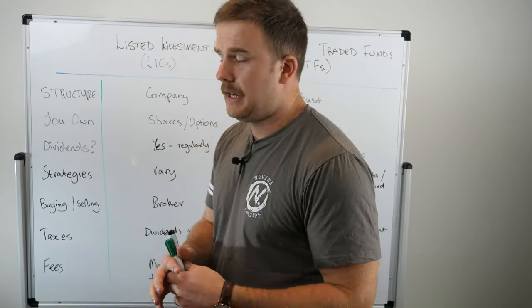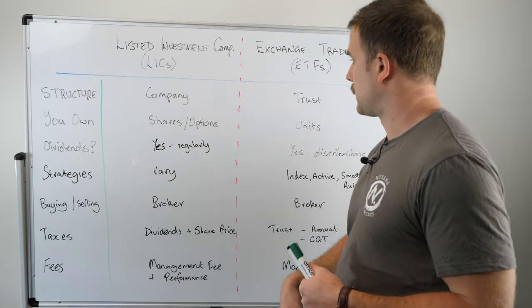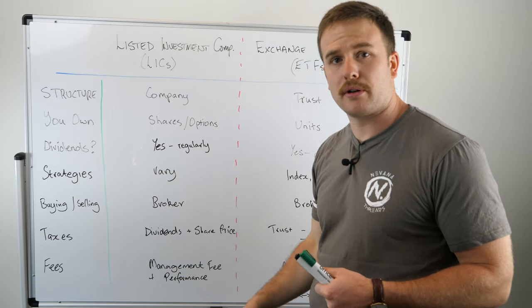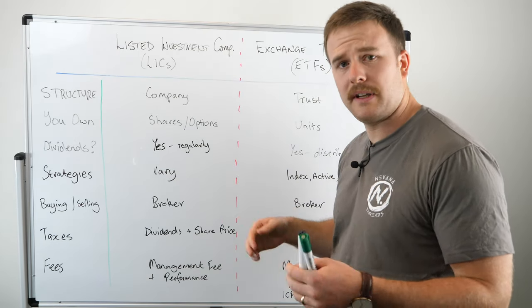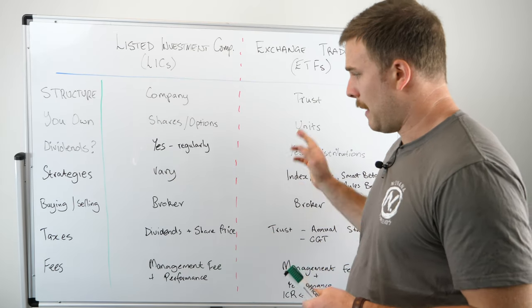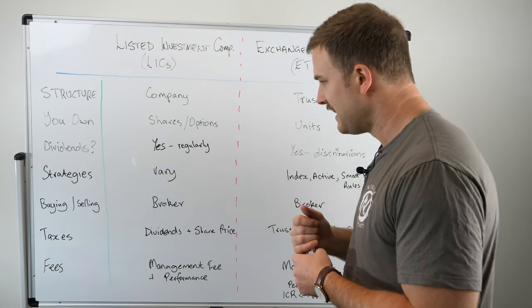How do you buy each of these? You can buy and sell a listed investment company or exchange-traded fund using a share brokerage account. The minimum is typically $500 plus some fees to get in and out. And what about taxes? Yes, of course.